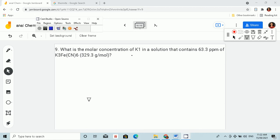So in this problem, we are asked about potassium ion. It seems tricky because of 63.3 ppm, but take note that ppm is equal to milligrams per liter. That's the unit of ppm, milligrams per liter.